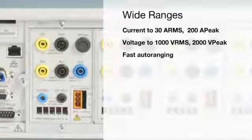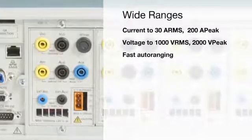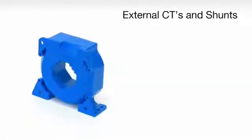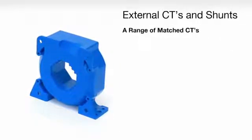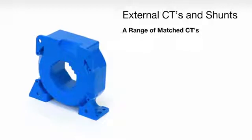Fast auto-ranging minimizes data gaps during wide current swings. For even higher currents, the PA-4000 supports external shunts or current transducers. A range of matched current transducers is available from Tektronix.